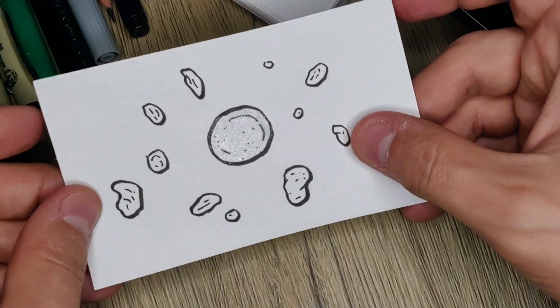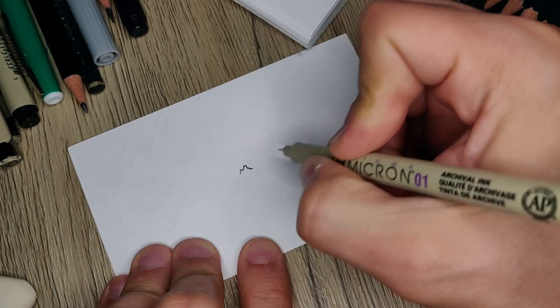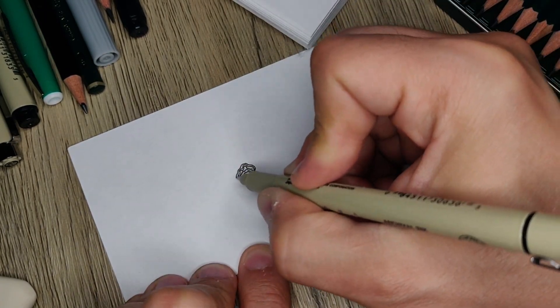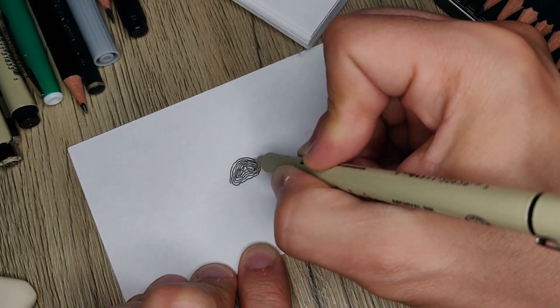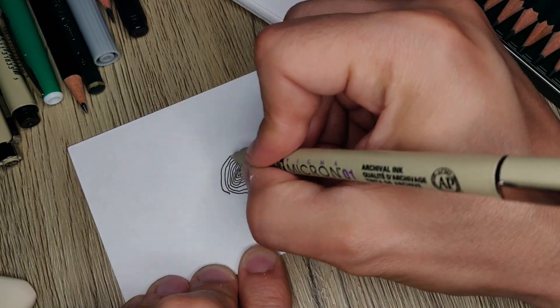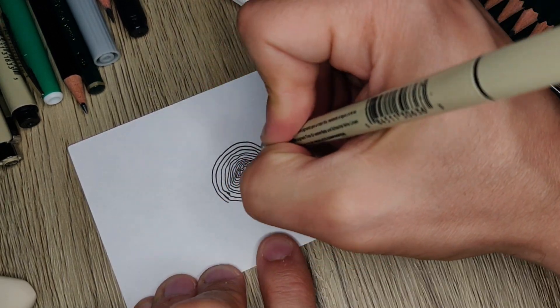They're formed when a bit of miscellaneous detritus gets stuck in one of the mollusk's various folds, so it decides to coat the intruder in a smooth cyst. Of course, it doesn't really decide, because mollusks don't have brains.